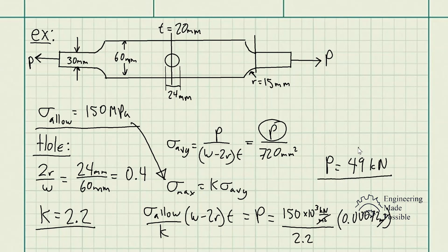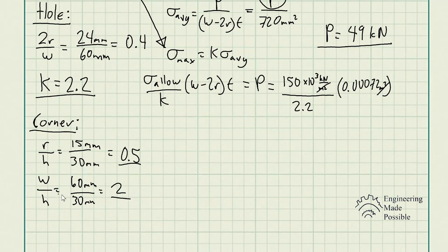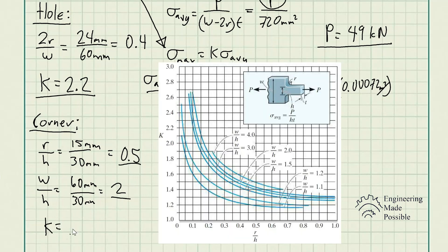This is not the final answer yet — it only considers the stress concentration at the hole. We also need to solve for the stress concentration at the corner. For the corner, the first graph parameter is R/H = 15/30 = 0.5, and the second parameter is W/H = 60/30 = 2. These give a stress concentration factor of K = 1.4.